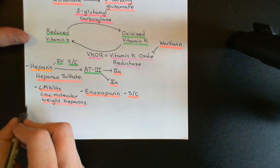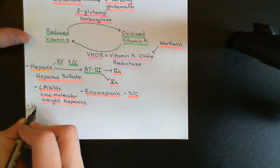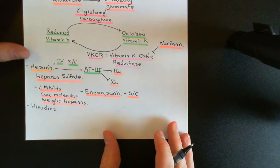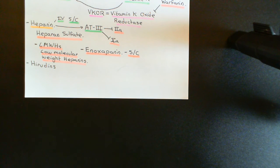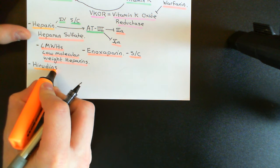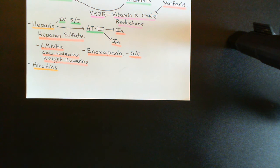The next class of drugs are what are known as the hiridins. These are drugs that are derived from an anticoagulant found in the saliva of the medicinal leech. The medicinal leech feeds on blood and does not want the blood to coagulate, so it contains an anticoagulant that works by inhibiting factor 2A thrombin, hence preventing the conversion of fibrinogen into fibrin monomers, and hence preventing the production of a fibrin mesh and therefore a clot.